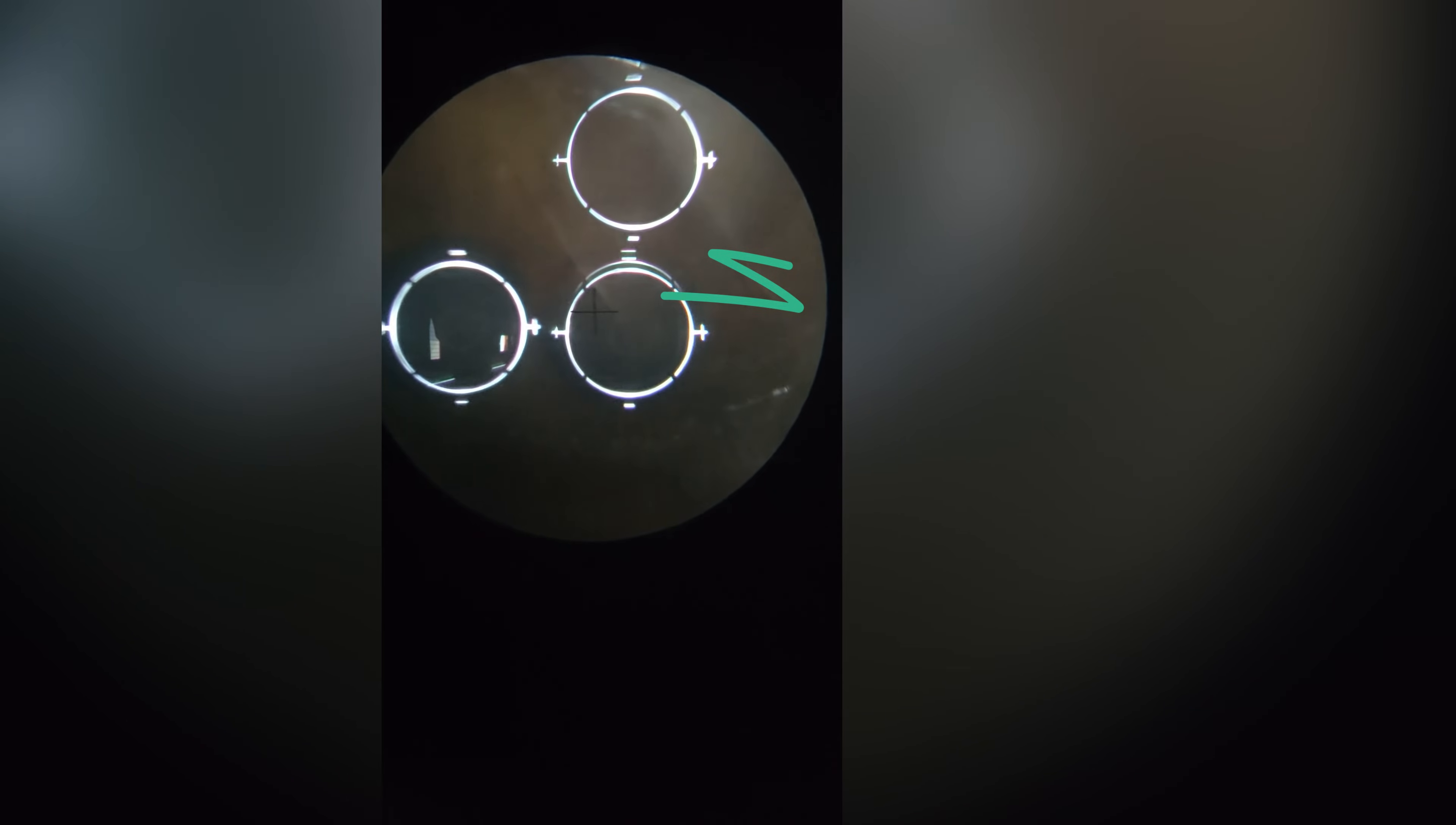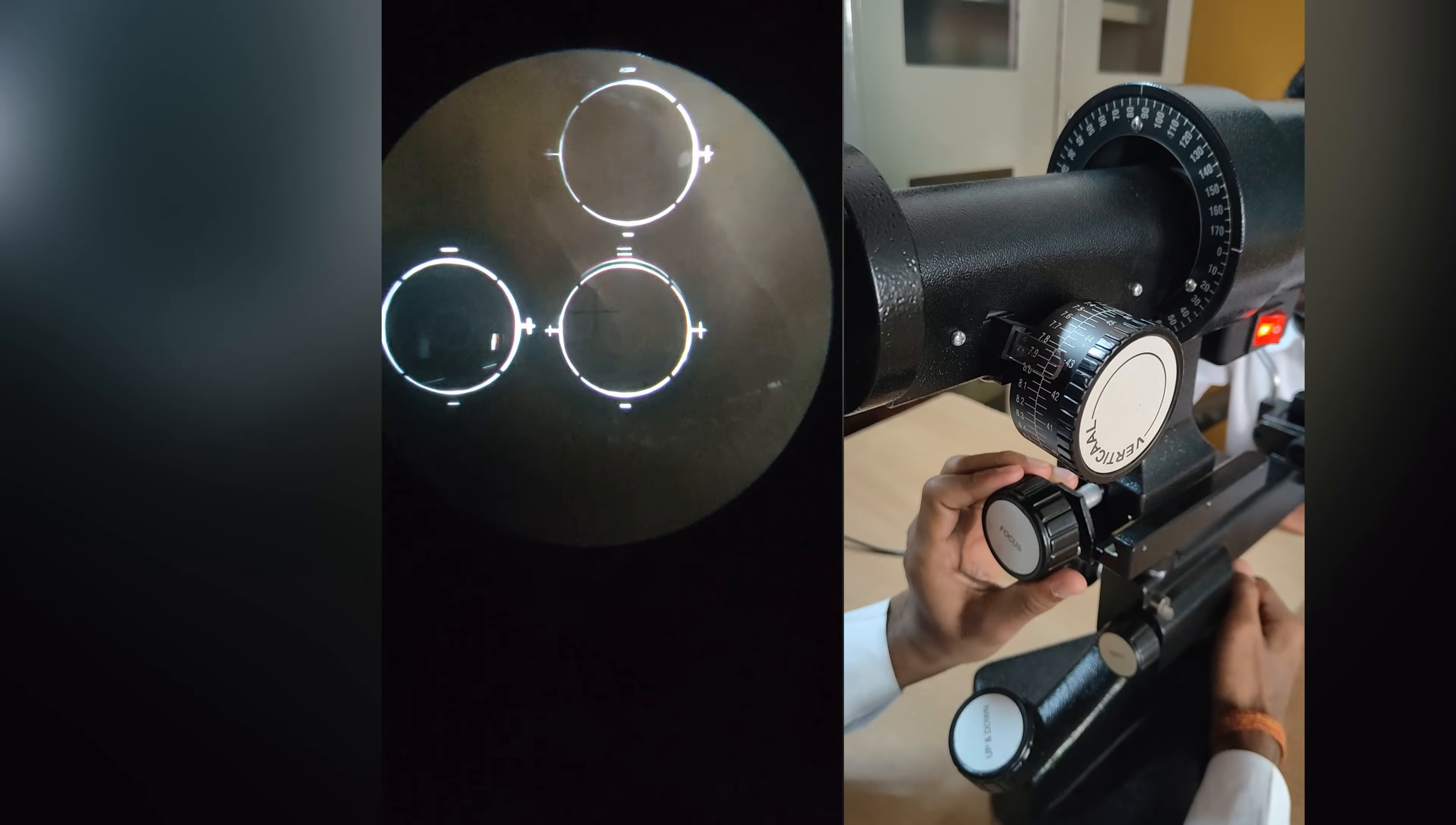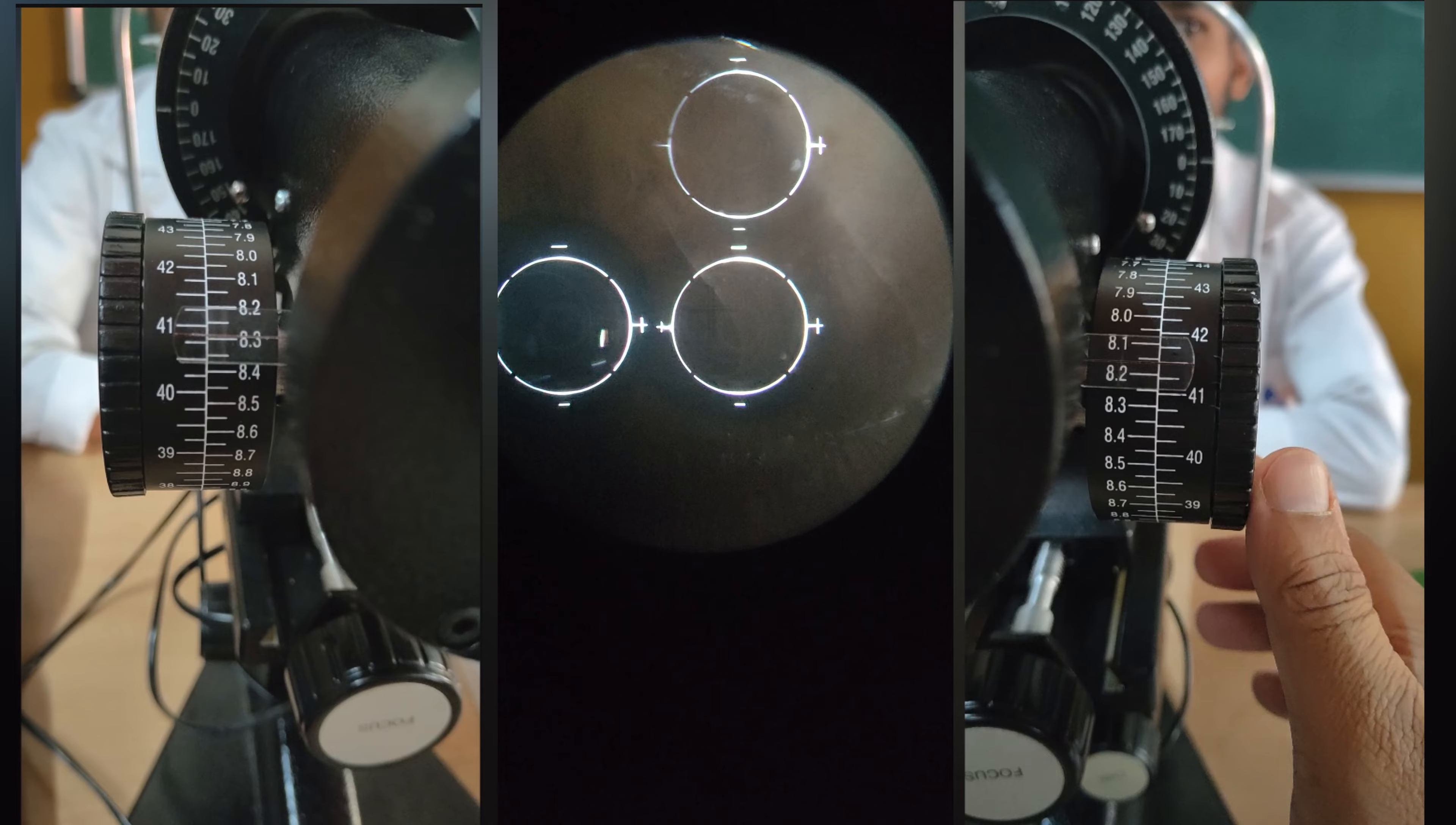Next step is focusing the mire. Looking through the eyepiece, first focus on the mire to get a clear view. Using the focusing knob, make sure the central mire is single. Once mires are focused, adjust the keratometer such that the reticle is in the center of the lower right circle.